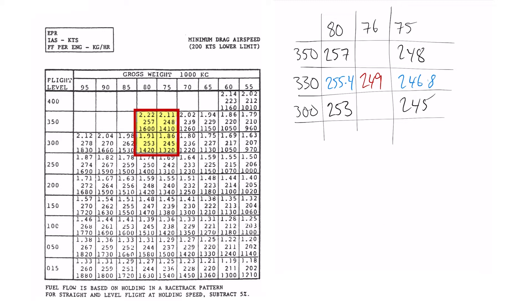So for a 76 ton mid zone weight, at flight level 330, the holding speed or the indicated airspeed that we'll fly when we're holding is 249 knots.